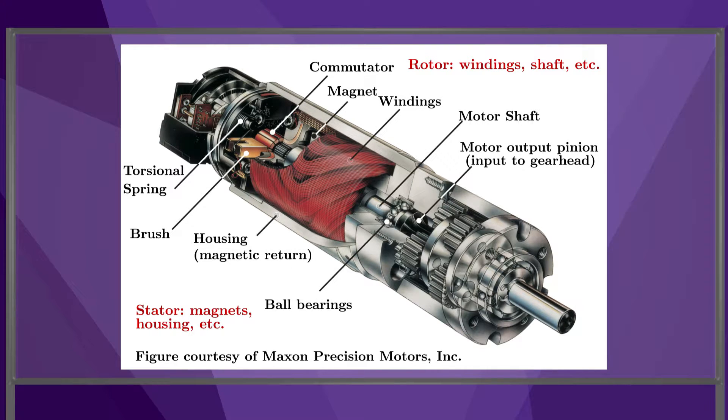Because this particular electric motor is a brushed motor, where current is carried to the motor coils or windings through brushes sliding on a commutator, the windings are part of the rotor and the magnets are part of the stator. For brushless motors, which are more commonly used in robots, the windings are part of the stator and the magnets are part of the rotor.